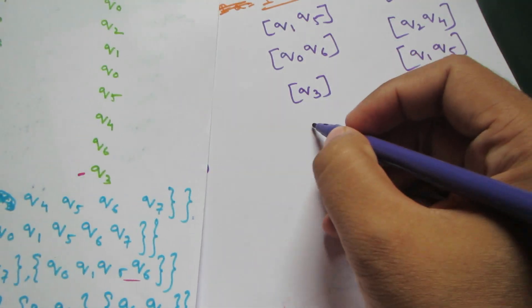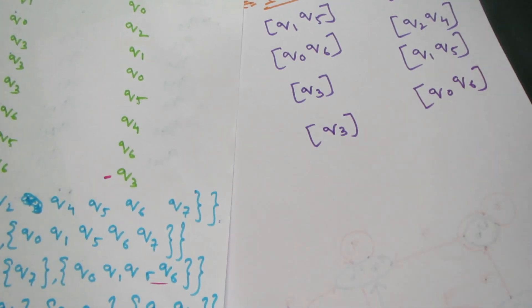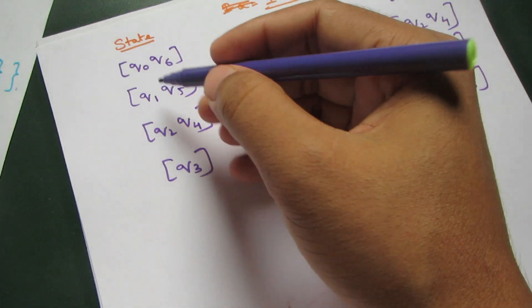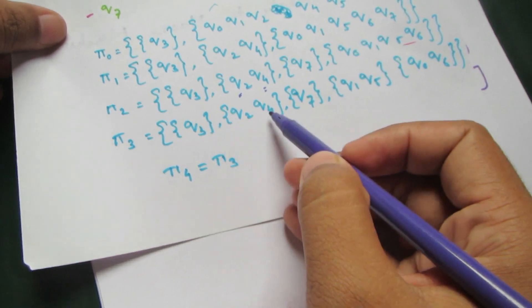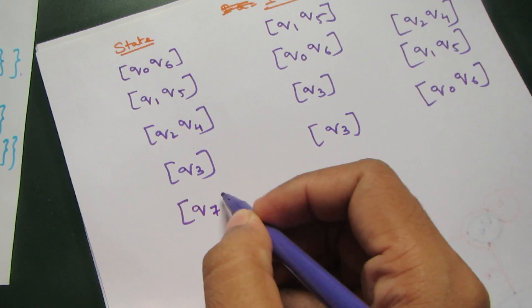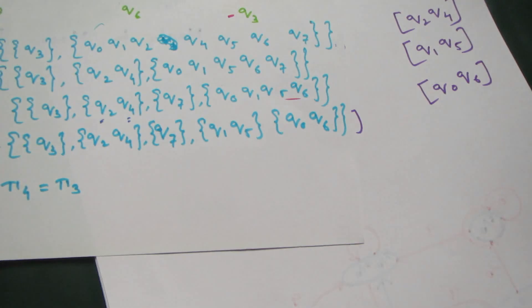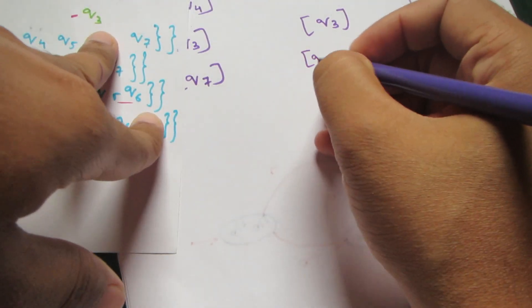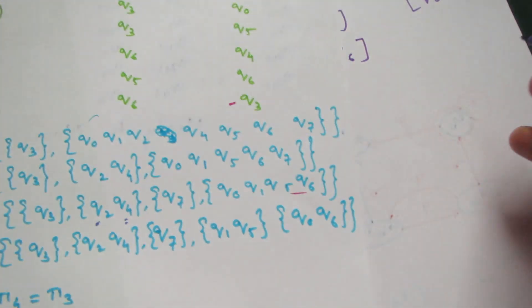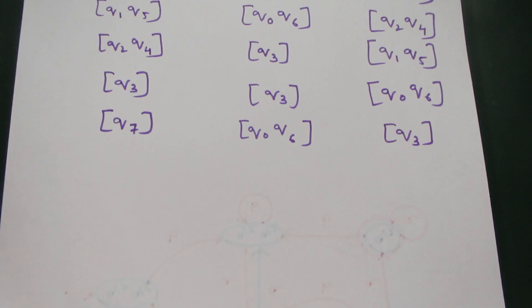Now for q3: q3 on input a goes to q0 q6, and on input b goes to q3. We have 5 states total: 1, 2, 3, 4, 5. q7 is still left, so we add q7. q7 on input a goes to q0 q6, and on input b goes to q3. This completes our table.